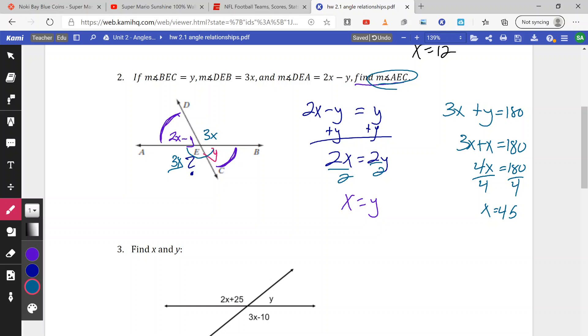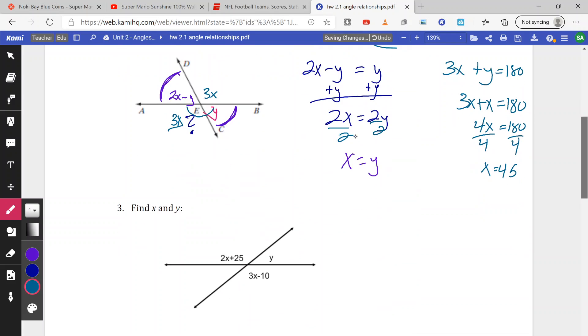But we need to figure out what the angle is. So now we know what the value of x is. We know that angle AEC equals 3x. Well, x is 45. So I do 3 times 45 and I get 135 degrees.